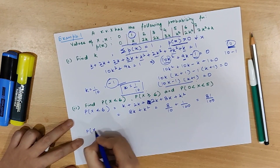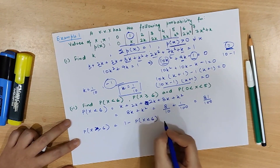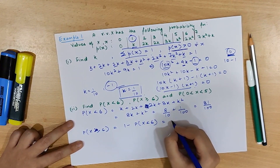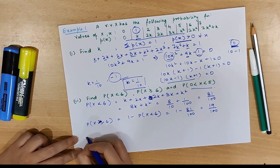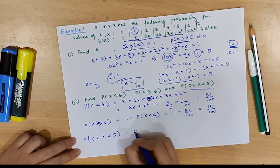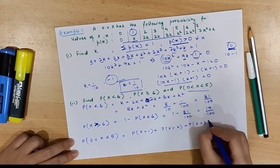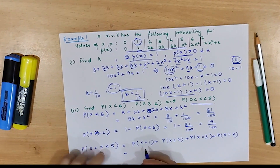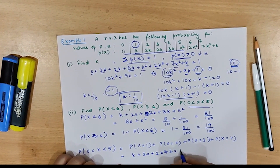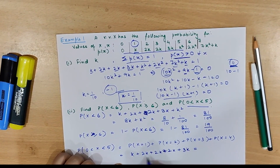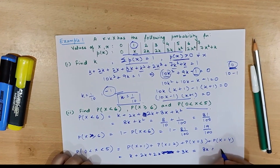For P(x ≥ 6), this is the complement of P(x < 6), which equals 1 − 81/100 = 19/100. Now for the third part, P(0 to 5), we have P(x = 1) + P(x = 2) + P(x = 3) + P(x = 4) + P(x = 5), giving k + 2k + 2k + 2k + 3k = 8/10.